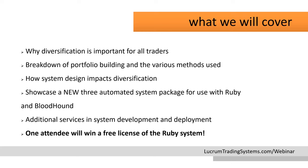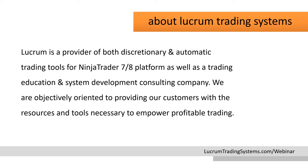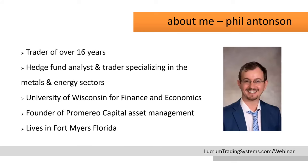We'll also be showcasing our new three automated system package for use with Ruby and Bloodhound, and then look at additional services in system development and deployment that Lucrum has to offer. At the very end of this presentation, one attendee will win a free lifetime license of the Ruby system. Lucrum Trading Systems is a provider of both discretionary and automatic trading tools for the NinjaTrader platform, as well as a trading education and system development consulting company.